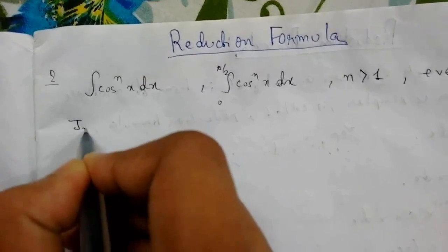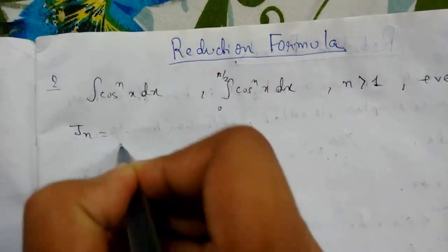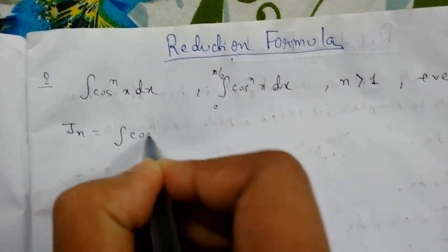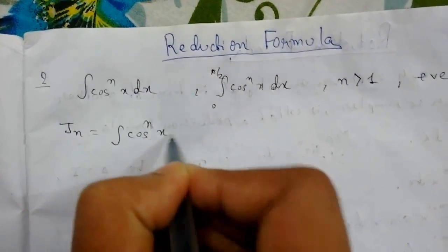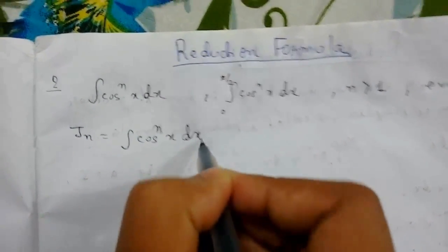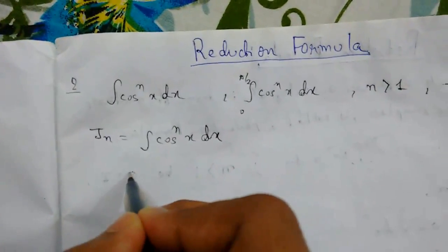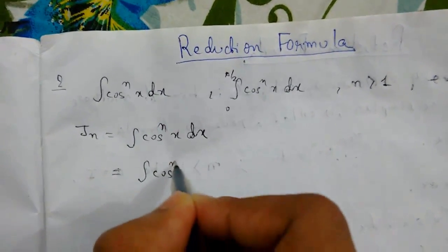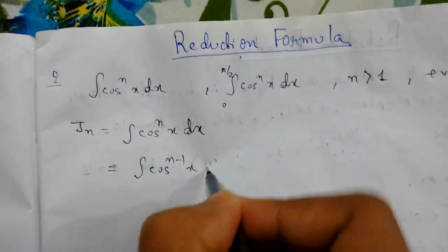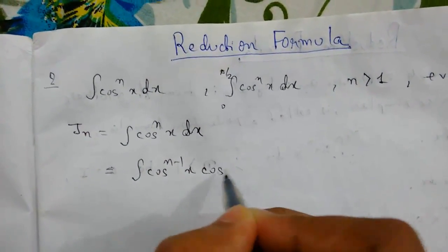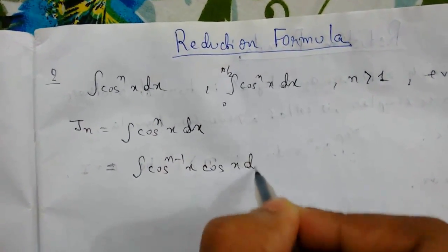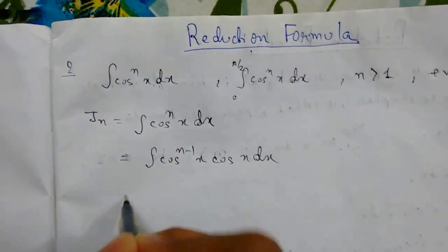Let Jn be the integral of cos^n(x) dx. We will proceed in the same way — we will reduce this first.